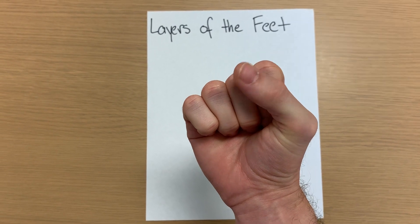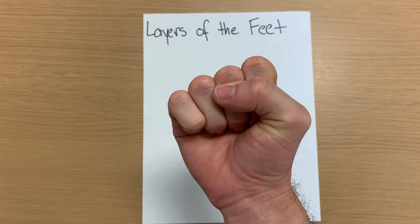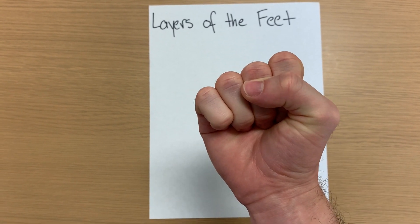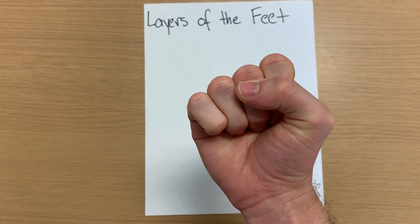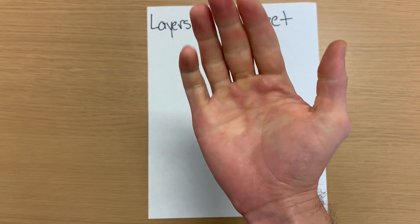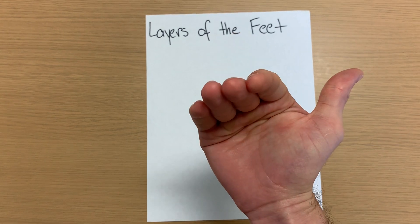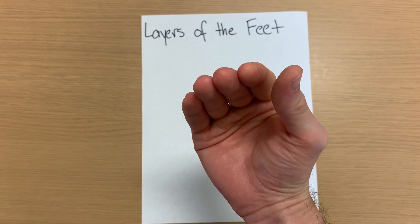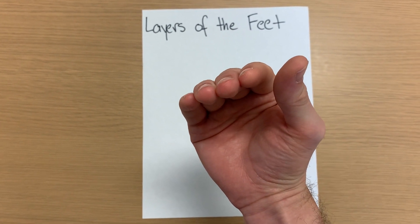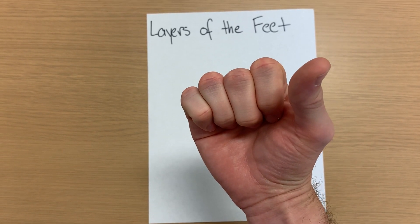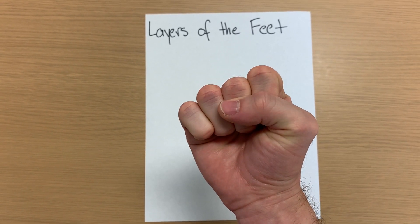And then finally, we have the tendon of the flexor hallucis longus. So remember for the second layer, there are two muscles and two tendons to remember. Two muscles are our lumbricals and quadratus plantae, and two tendons, flexor digitorum longus and flexor hallucis longus.